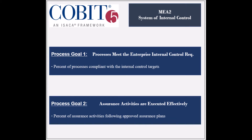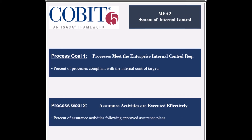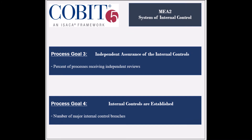The first process goal is to ensure that the processes meet the enterprise internal control system requirements, and its achievement is measured by the percent of processes compliant with the internal control targets. The second goal is to ensure that the performance of the internal control system is reviewed, and its achievement is measured by the percent of processes being reviewed independently.